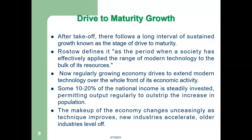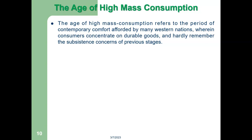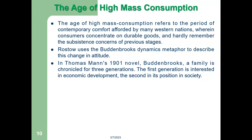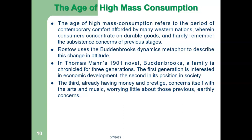The last stage of economic growth is the age of high mass consumption, which refers to the period of contemporary comfort afforded by many western nations, wherein consumers concentrate on durable goods and hardly remember the subsistence concerns of previous stages. Rostow uses a Buddenbrooks dynamics metaphor to describe this change in attitude. In Thomas Mann's 1901 novel, the Buddenbrooks family is a chronicle for three generations: the first generation is interested in economic development, the second in its position in society, and the third — already having money and prestige — concerns itself with the arts and music, worrying little about those previous earthly concerns.